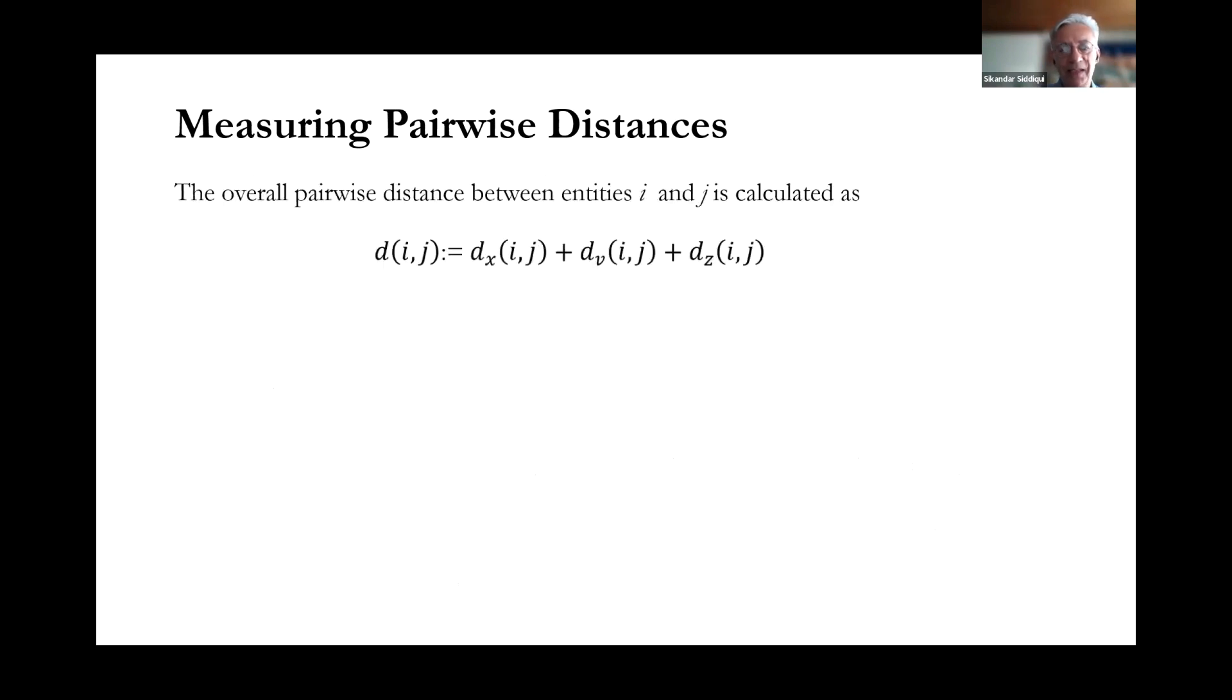So having defined the distance measures as shown before, in order to arrive at the overall pairwise distance between two entities i and j, we simply add up these variable specific distance measures to come up with a sum, which then is the overall pairwise distance between entities i and j.